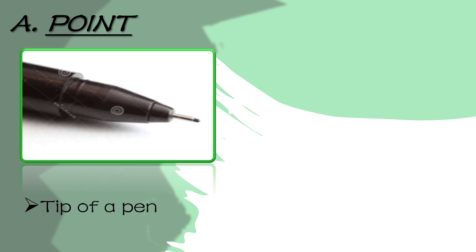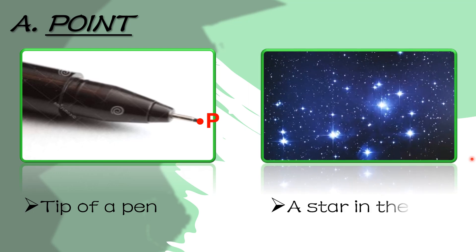So ano nga ba ang mga bagay na magsisimbolize o nagbibigay ng halimbawa as point? Like this one — we have the tip of a pen, iyon yung dulo ng ball pen. So let us name this point as point P. Another example of a point is a star in the sky. Kapag tinignan natin yung bituin sa langit, iyon ay parang mga maliliit na tultok. So that also represents a point. Let us name this star as point S.